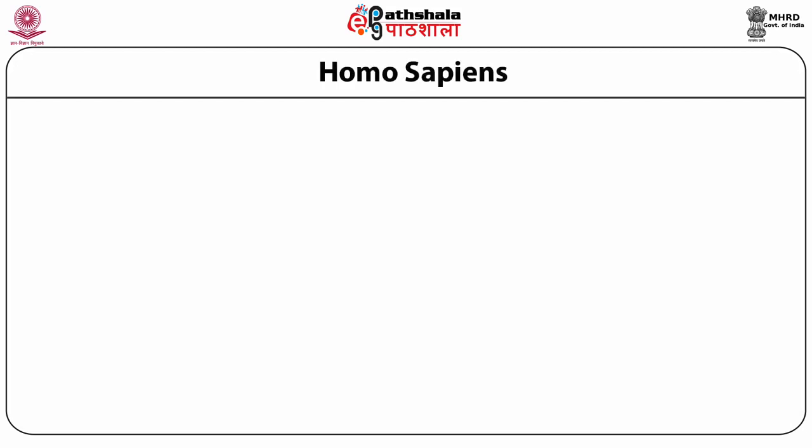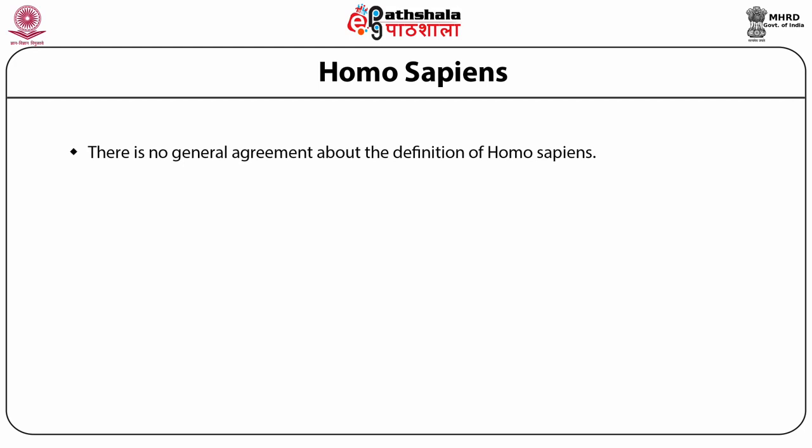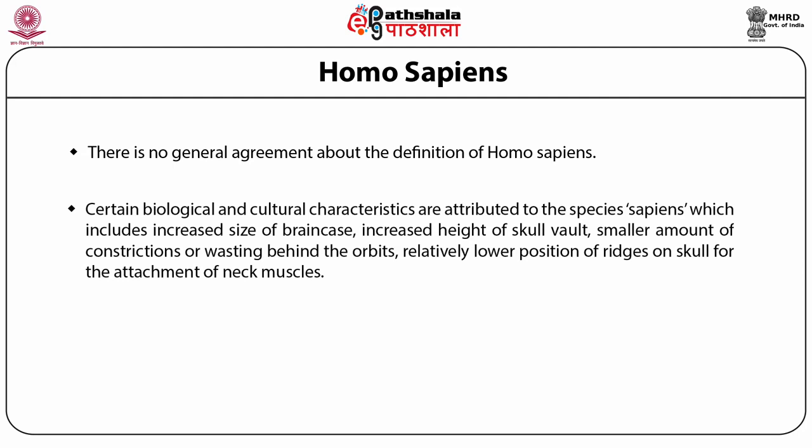There is no general agreement about the definition of Homo sapiens. Certain biological and cultural characteristics are attributed to the species, which include increased brain case size, increased skull height, smaller supraorbital constrictions behind the orbits, and relatively lower positions of ridges for neck muscle attachment. Associated features include a cranial capacity of 900 to 2300 cc, rounded occiput, bent basicranium, maximum skull breadth higher on the skull, flatter face, well-defined chin, and smaller incisors.